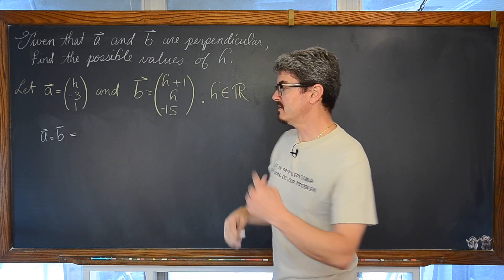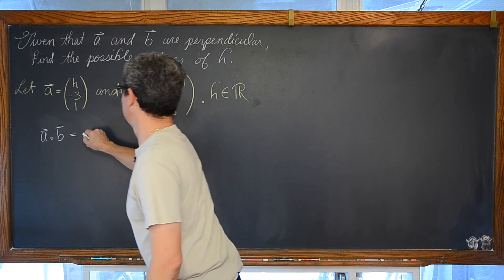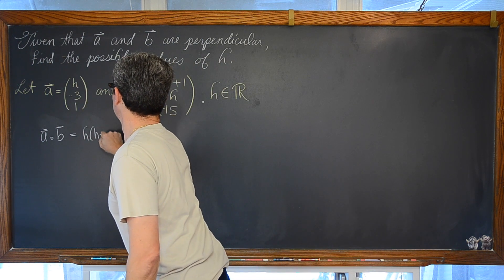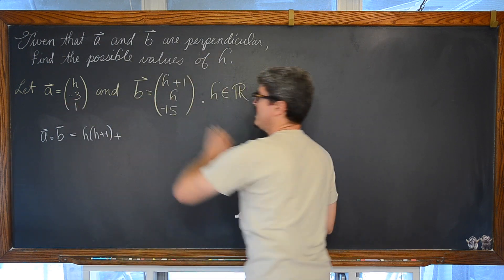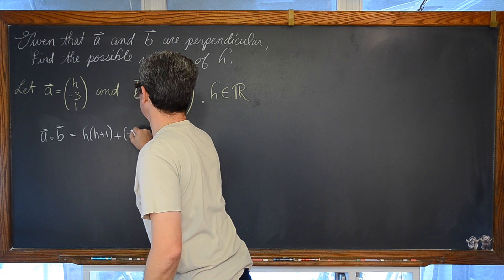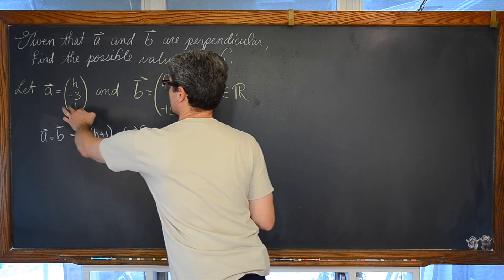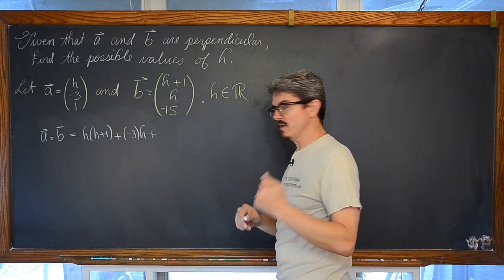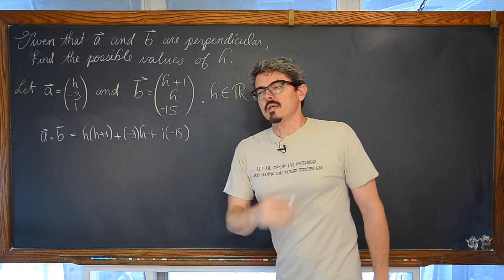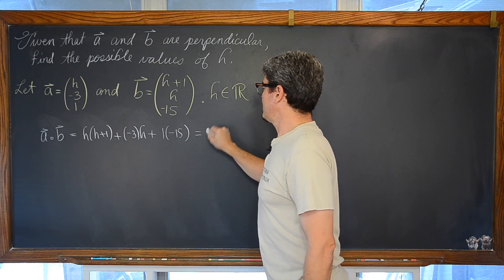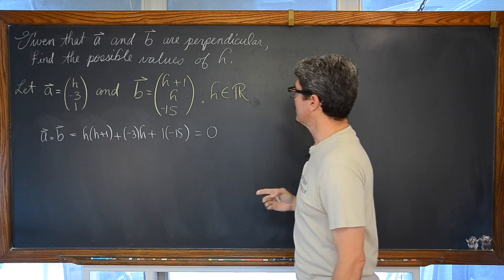Plus the components along the y axis and multiplying those together, plus the components along the z axis, multiply those together, and recall again, or just know the fact that that dot product has to be equal to zero, if these vectors are stated to be perpendicular.